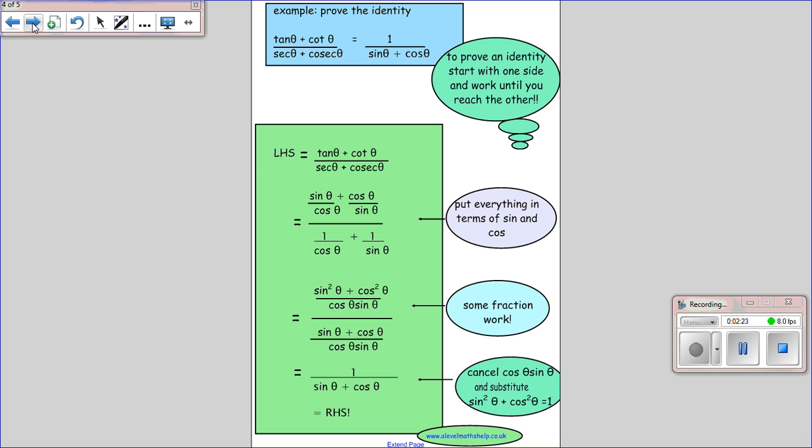Okay, so the questions you get for these are prove identity questions. And they're nice questions, really. They can be tricky and sometimes you seem to go round in circles. But I think they're quite fun to do. Now, when you try to prove an identity, what you do is you start with one side, and normally you start with the most complicated side, and then you work to the other side, which is normally the simpler side.